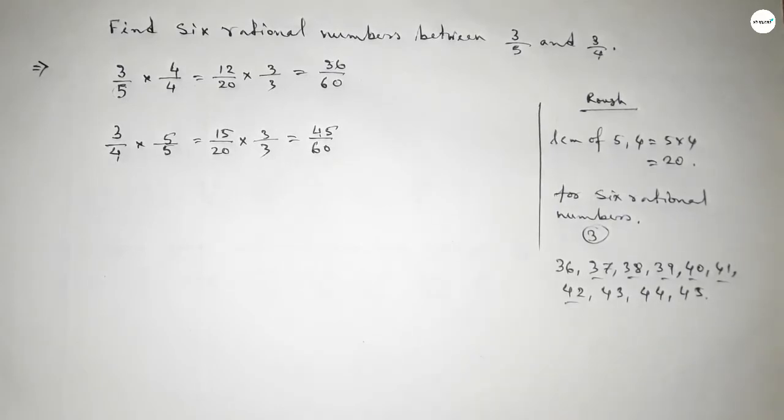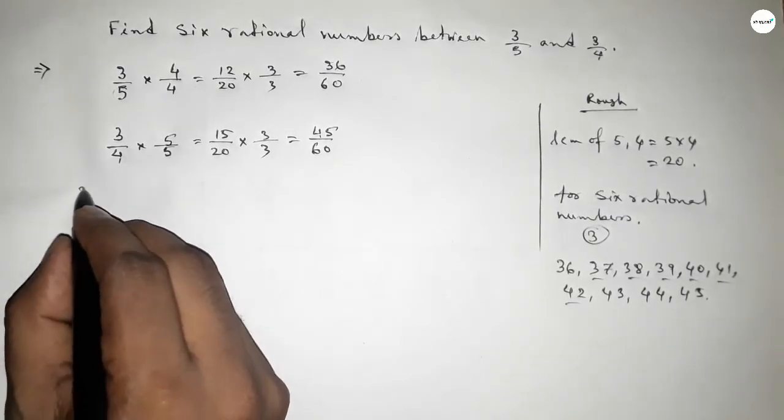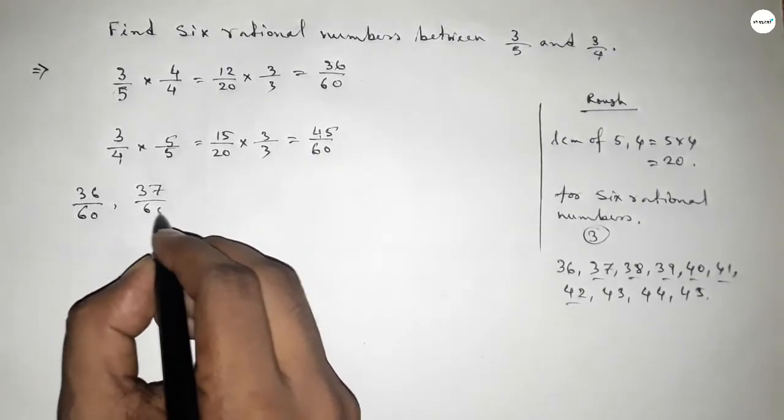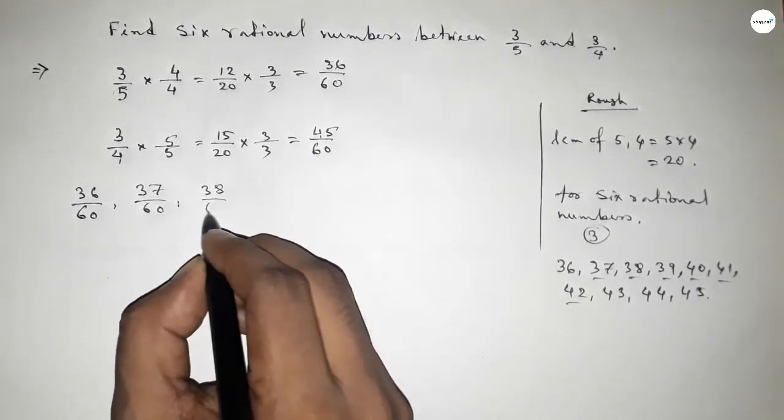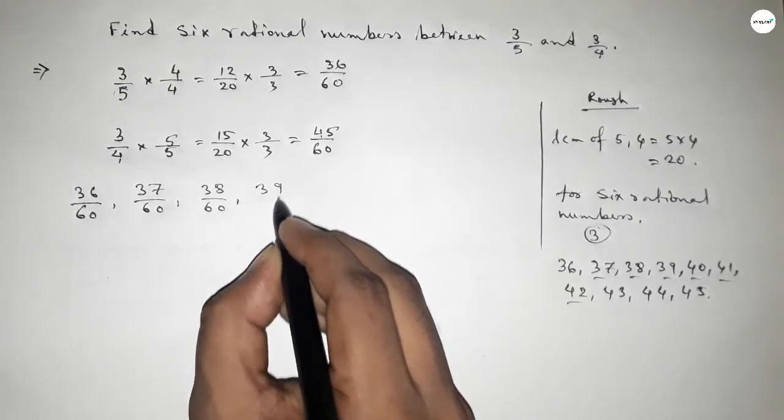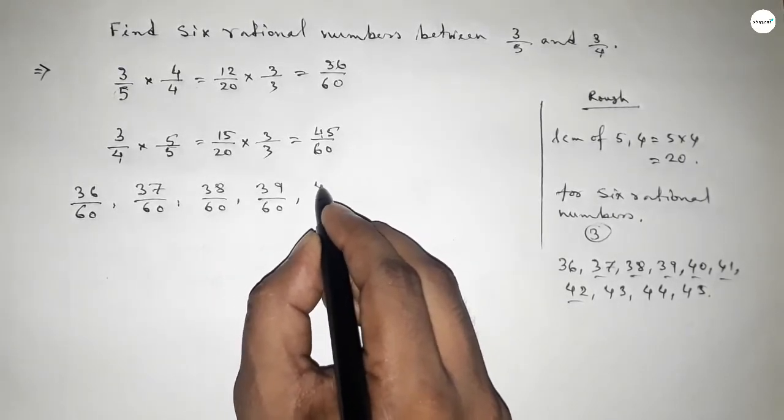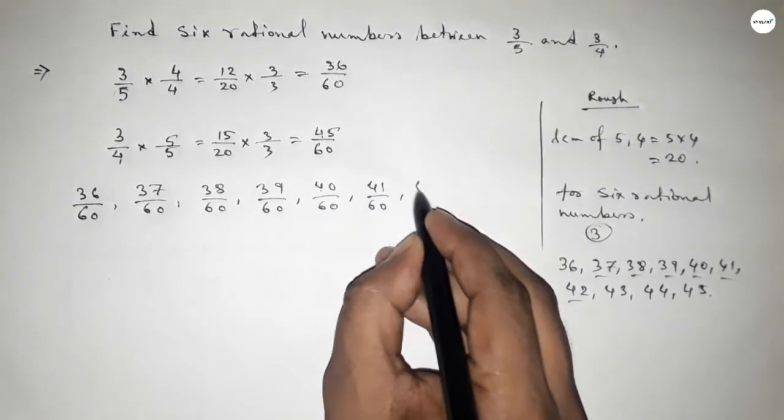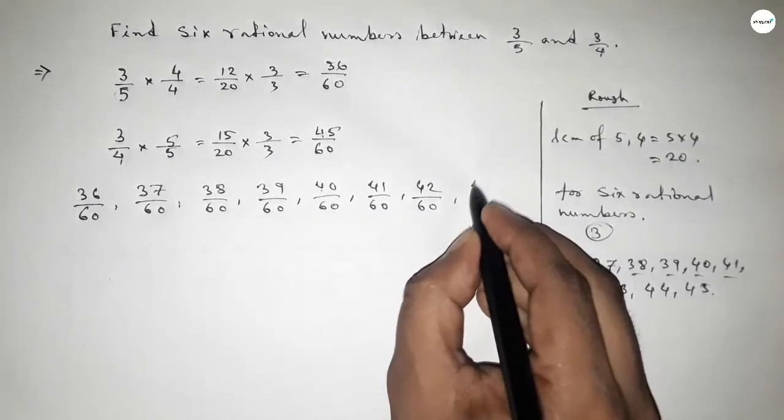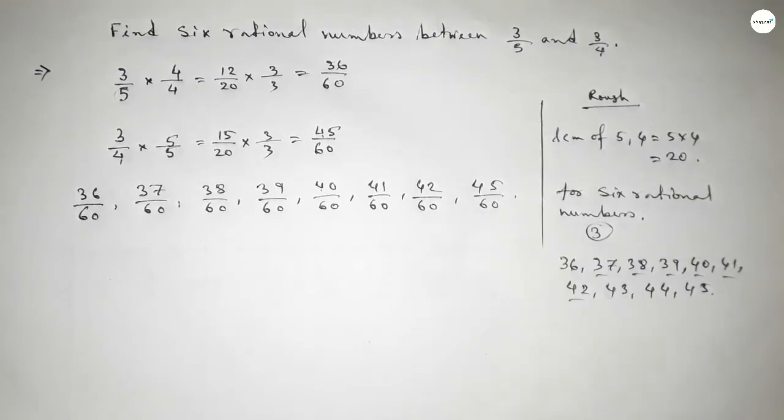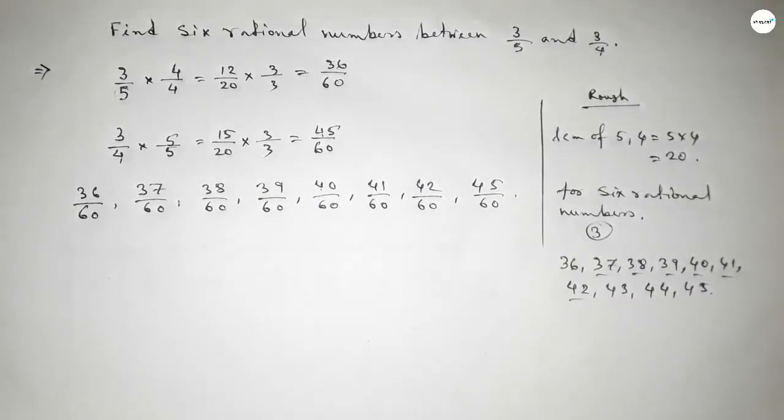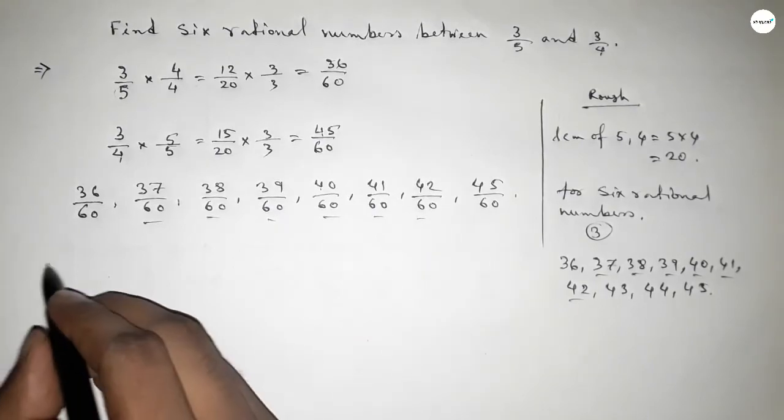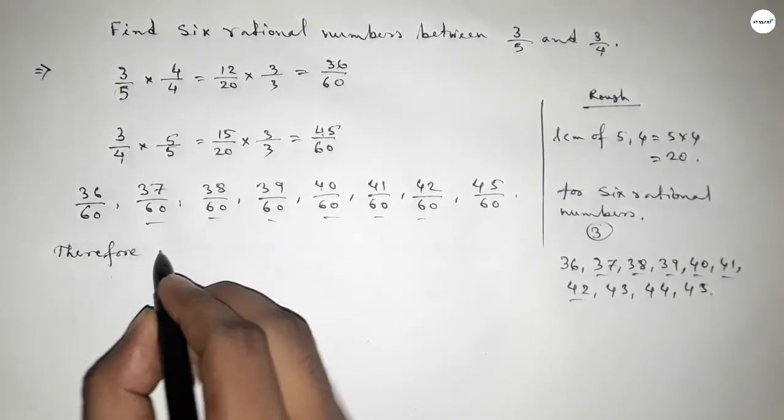So here all the rational numbers are 36 over 60, 37 over 60, 38 over 60, 39 over 60, 40 over 60, 41 over 60, 42 over 60, and last one 45 over 60. So these are the 6 rational numbers between 3 over 5 and 3 over 4.